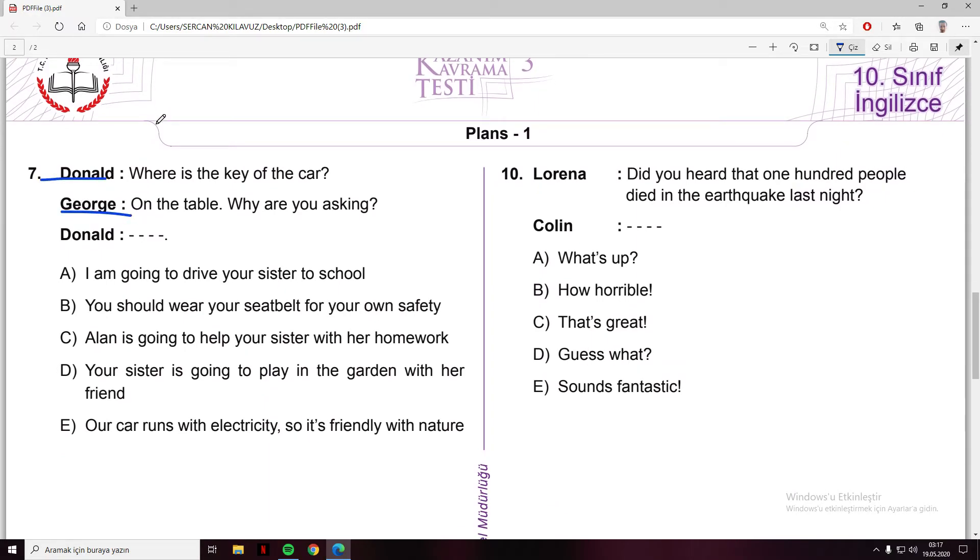Donald and George: where is the key of the car? On the table. Why are you asking? Donald answers but I'm going to drive your sister to school - reasonable. You should wear your seatbelt - no. Why are you asking the keys - no. Alan is going to help your sister with her homework - no. Your sister is going to play in the garden with her friend - no. Our car runs with electricity so it's friendly with nature - no.